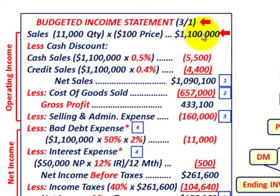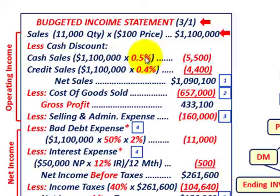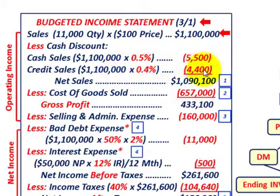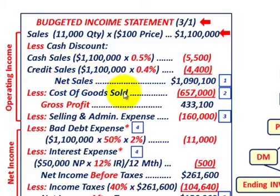Total sales come to $1,100,000. We then subtract cash discounts: half a percent on cash sales equals $5,500, and four-tenths of a percent on credit sales equals $4,400. Totaling all cash discounts and subtracting from sales gives us net sales of $1,090,100.